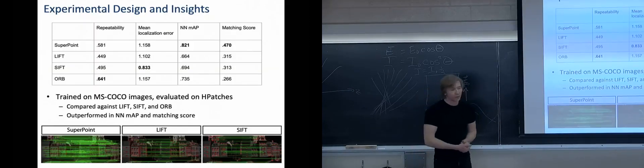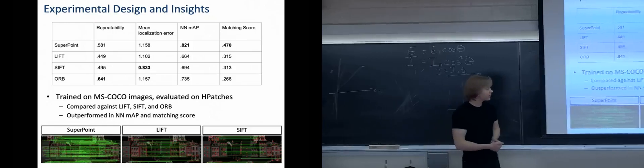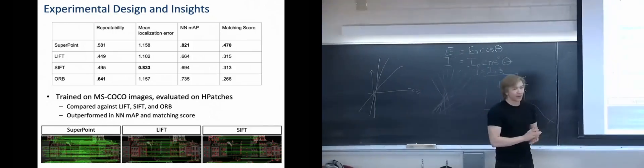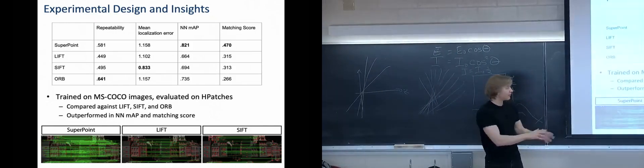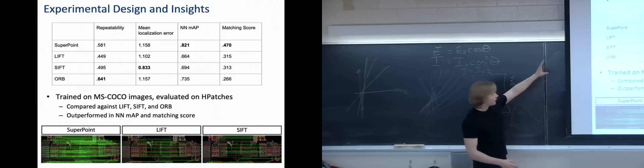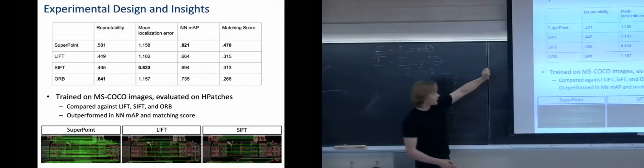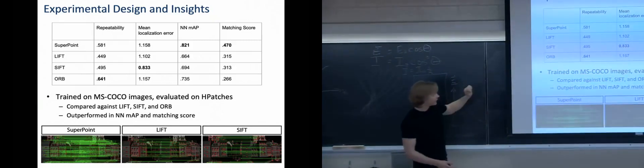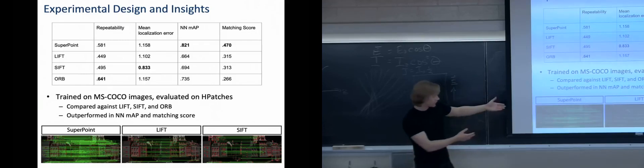So on the actual experiment, it was trained on COCO images and it was evaluated on H-patches, which is a dataset of scenes and various views of those same scenes that you can do matching across them. The performance was fairly comparable in repeatability and mean localization error, and it outperformed LIFT, SIFT, and ORB in nearest neighbor mean average precision and matching score. It also just visually produced good, dense results and correct matches compared to the other algorithms.